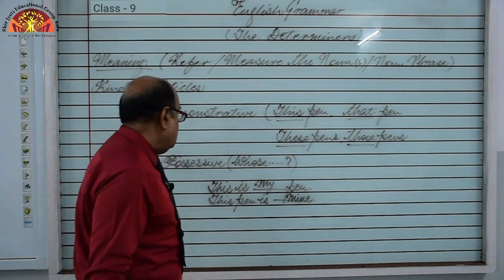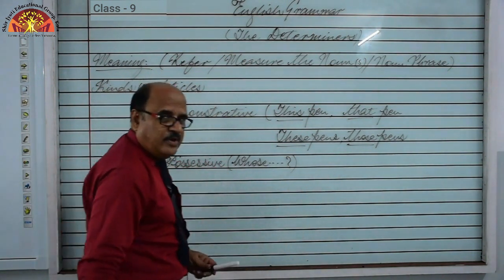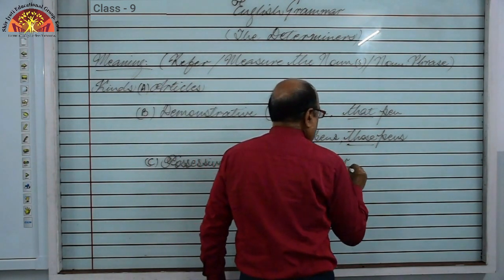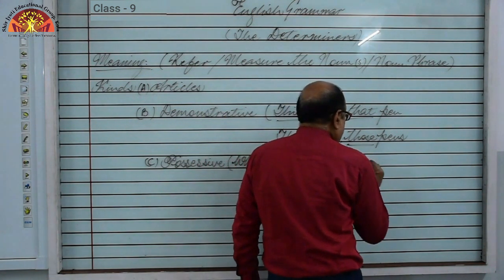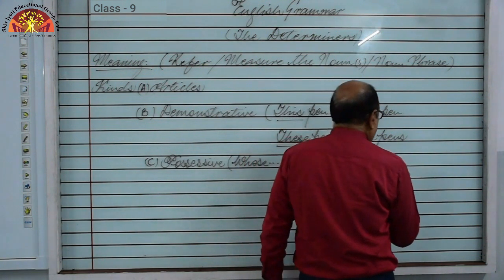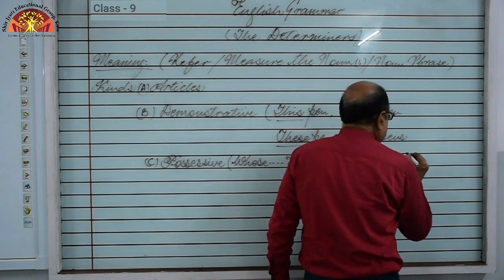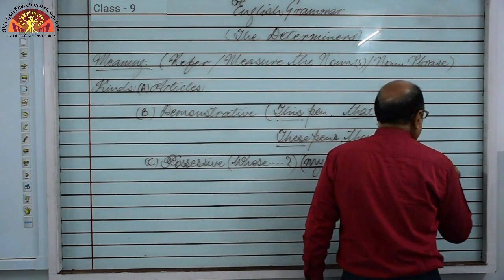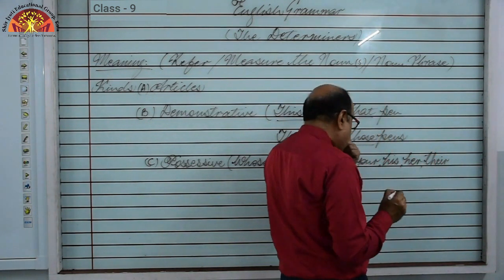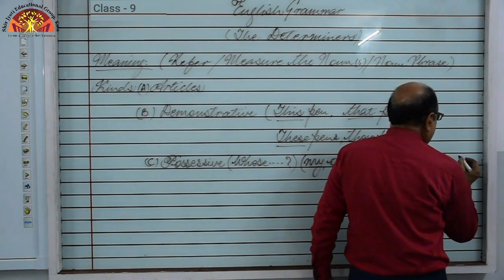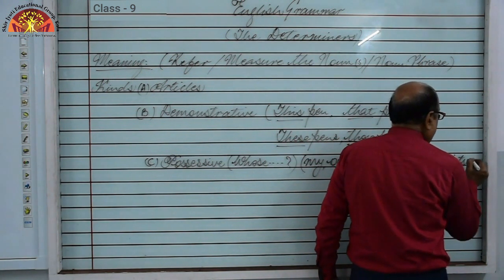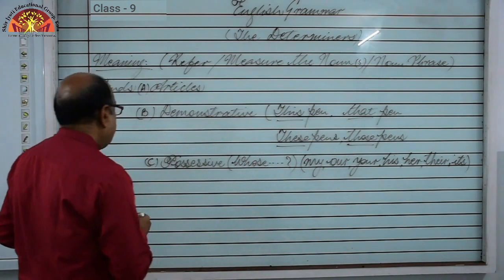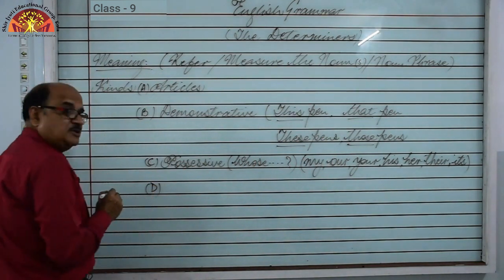So in this way this is possessive determiner. Let me write: 'my' — first person singular; 'our' — first person plural; 'your' — second person; 'his' — third person singular masculine; 'her' — third person singular feminine; 'their' — third person plural; and 'its' as well. They are all possessive determiners.